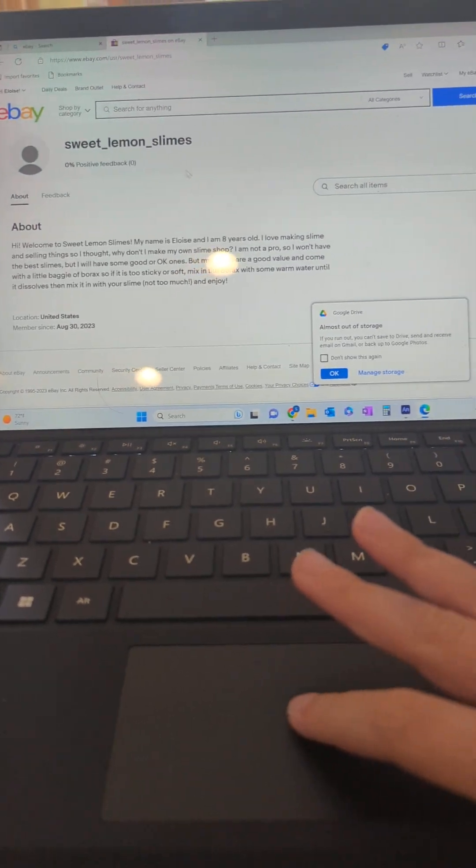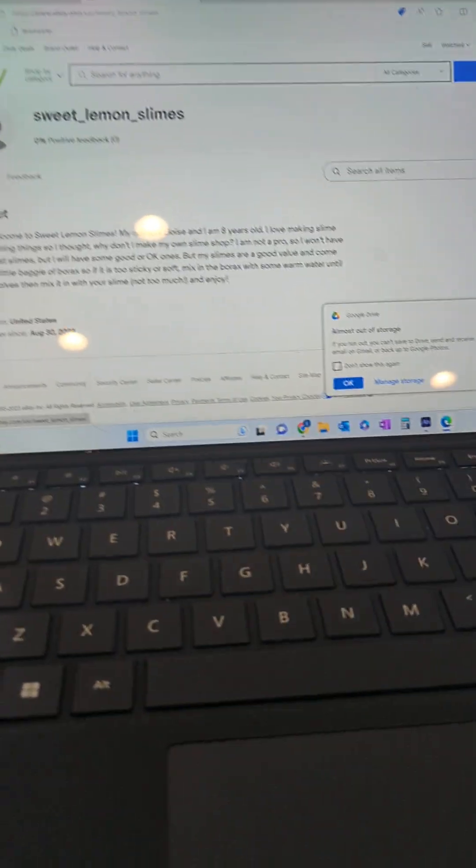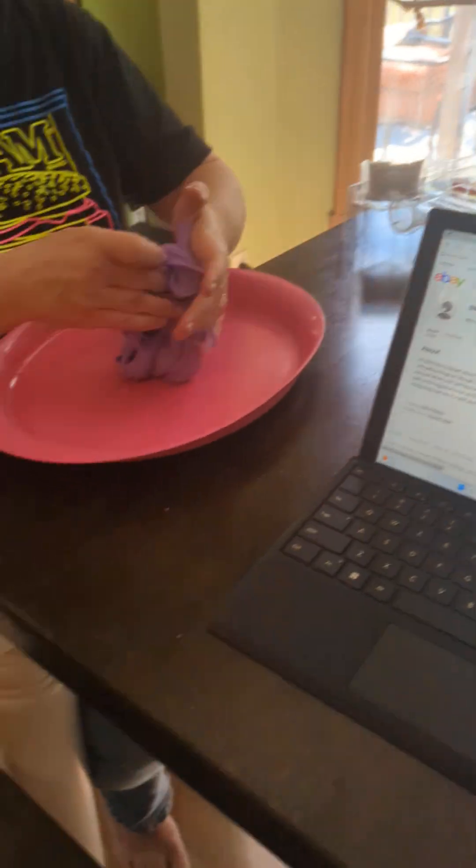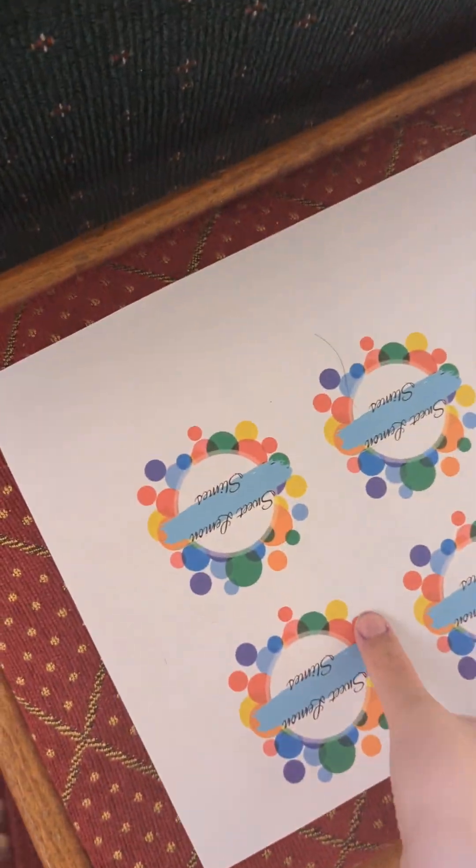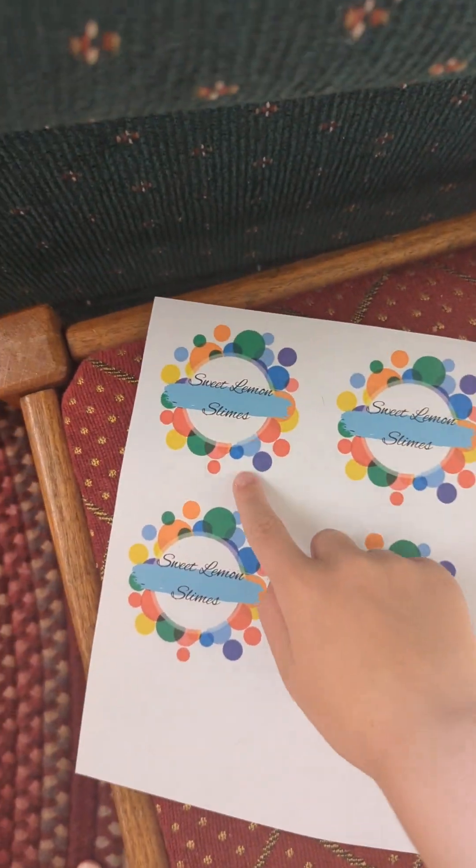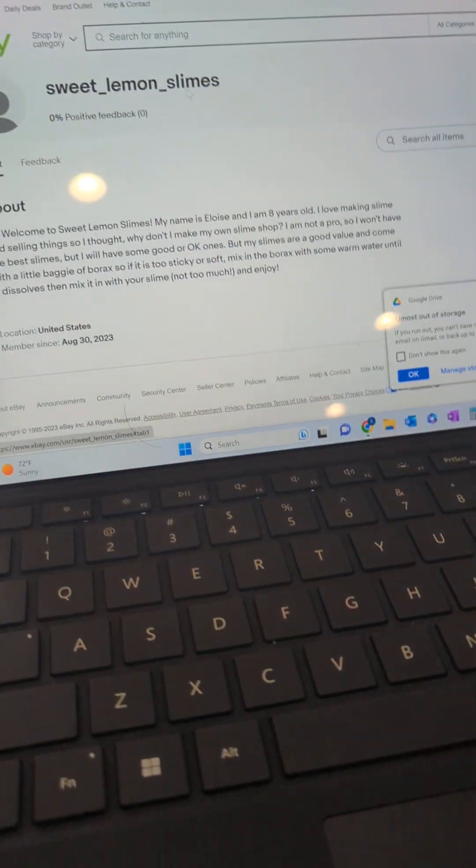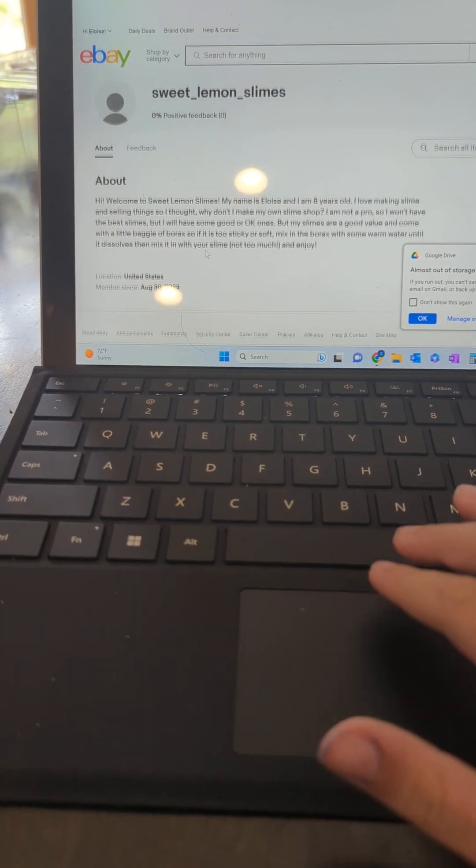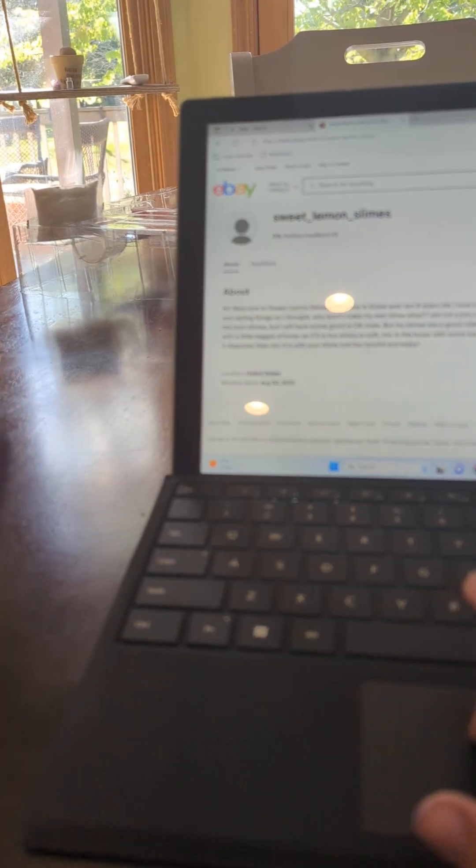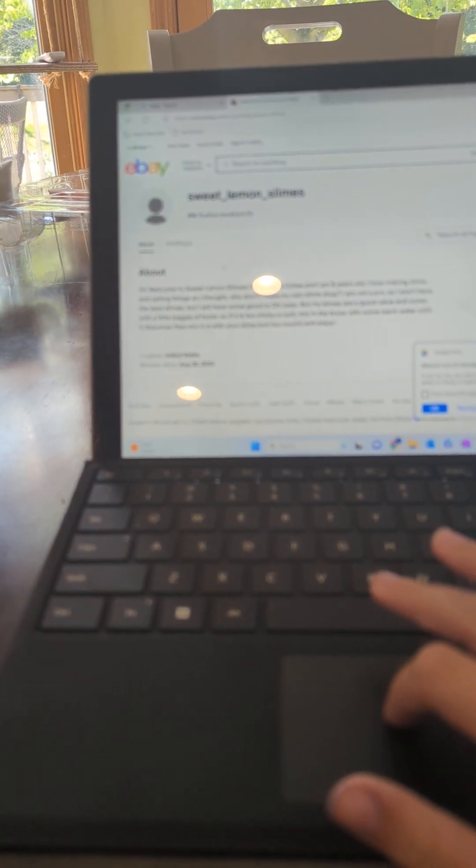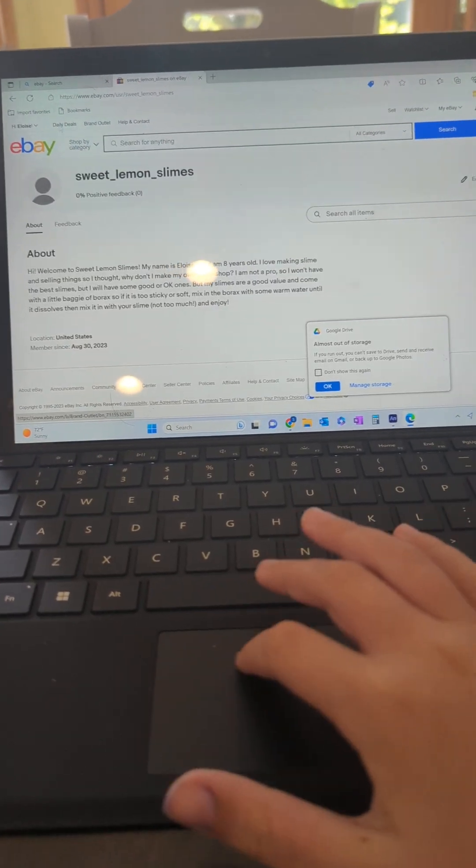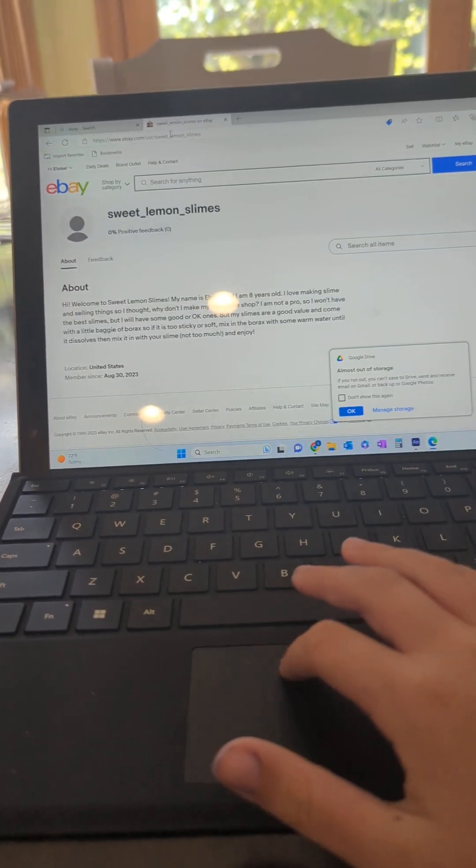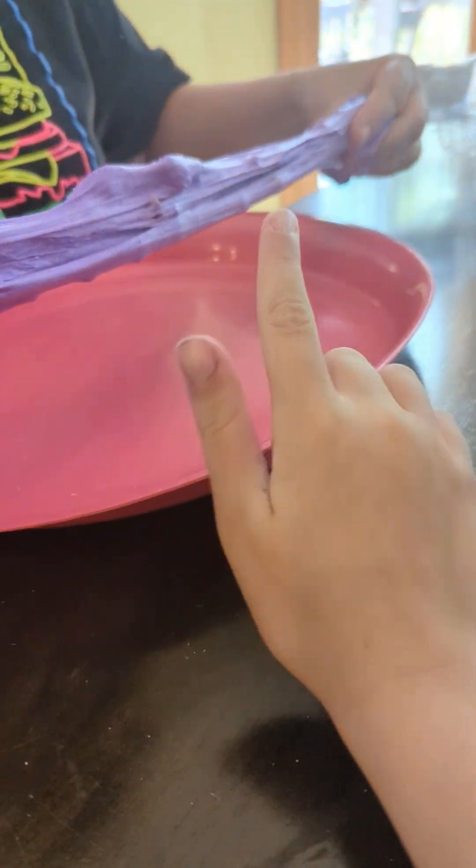And it should look like this. We're gonna make the logo in a bit which will look like this: sweet lemon slimes. And then we'll have some slimes here where you can just scroll down and buy some slime. And then when you're done, we will mail it to you and you'll get some slime as good as this.